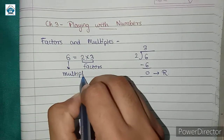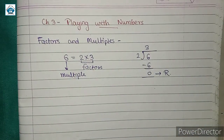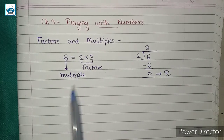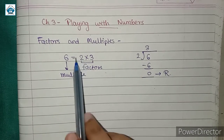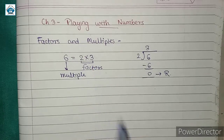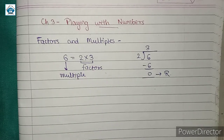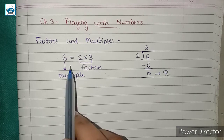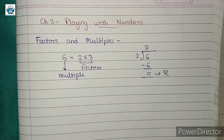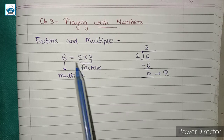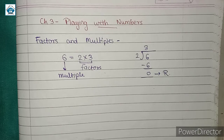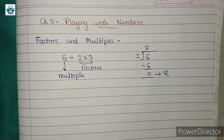On the other hand, 6 is a multiple. 6 is a multiple of 2 and 3, because on dividing 6 with 2 and 3 we get remainder 0. Therefore 2 and 3 are factors, and 6 is a multiple of 2 and 3.